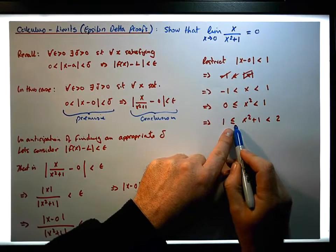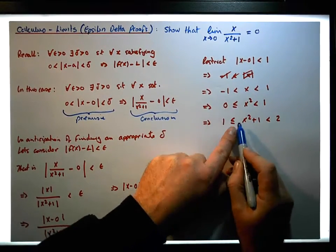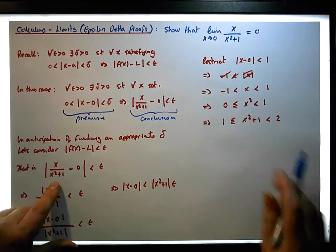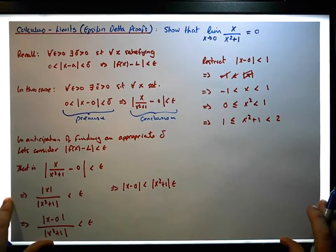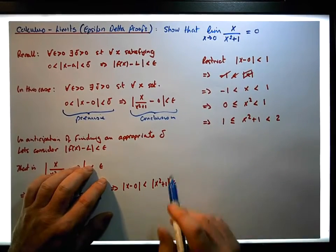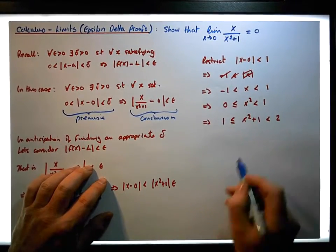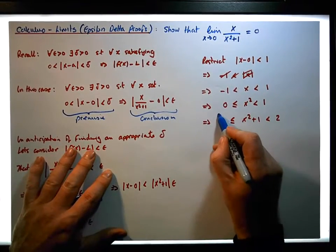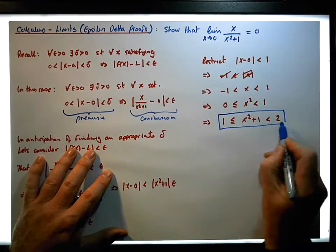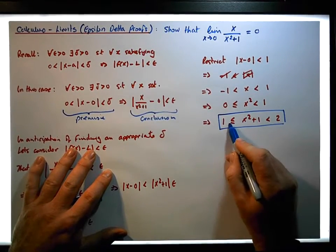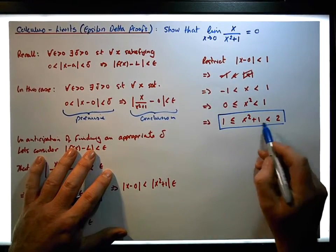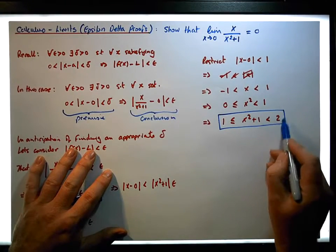It's closed on one side and open on the other — a half-open, half-closed interval. But the most important thing is that we've bounded x squared plus one below by one, and we've bounded it above by two.